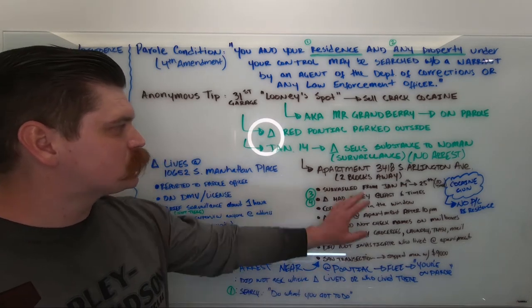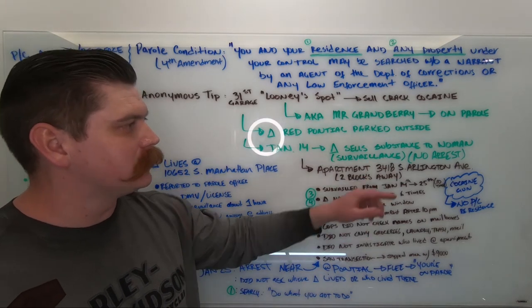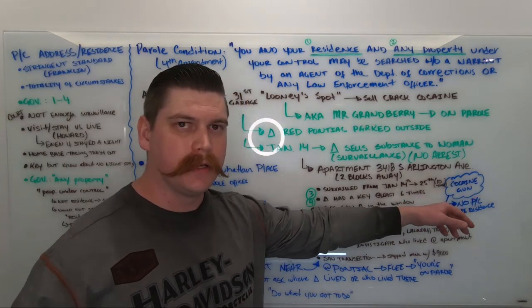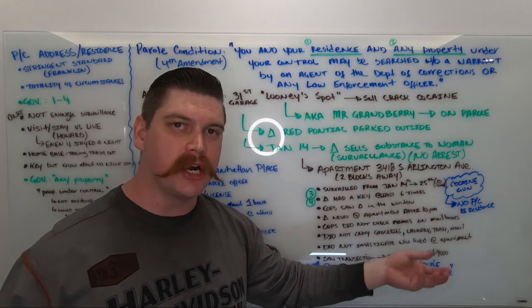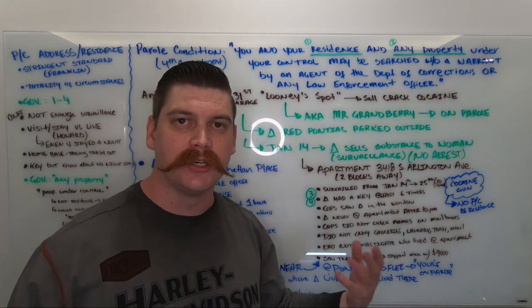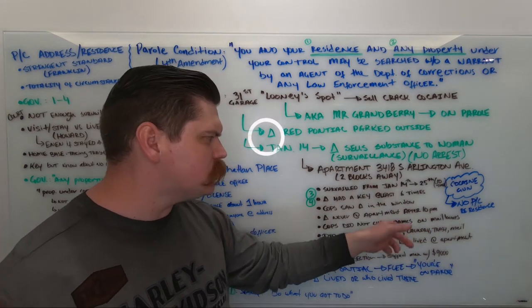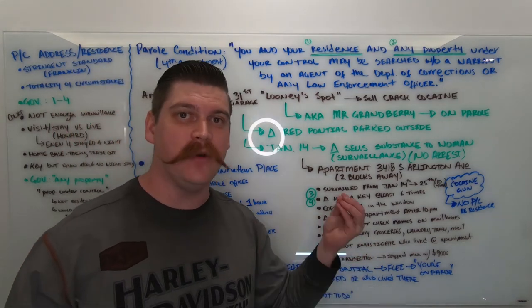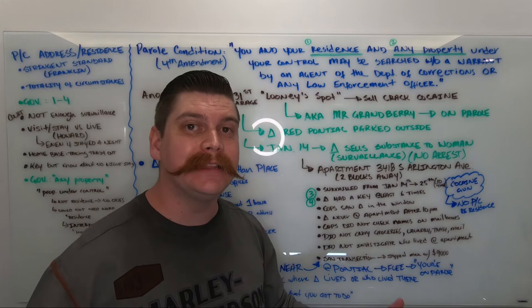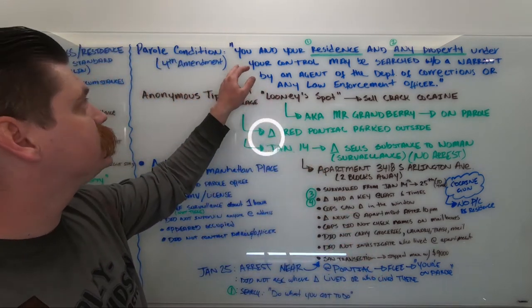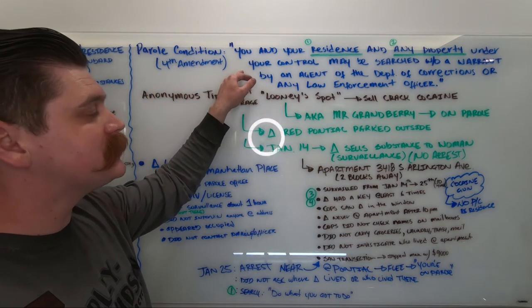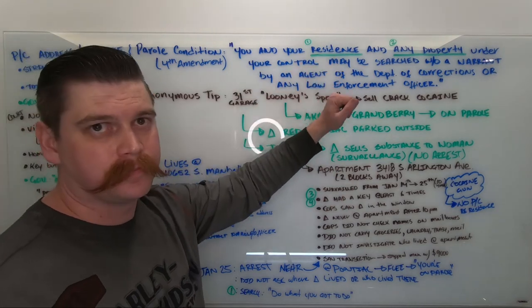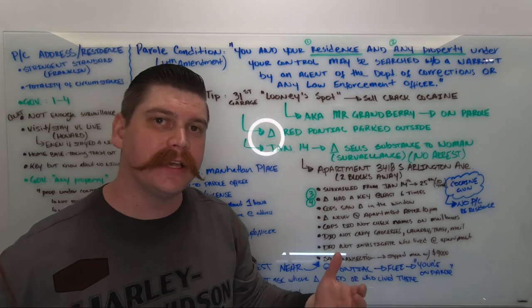They decided to search this apartment at Arlington Avenue. What do they find there? They find cocaine and a gun. So Mr. Granbury gets charged with felon in possession and drug charges. How do they search this apartment? Well, the officers did not have a warrant. So they completely relied on this parole condition because they believed that this was Mr. Granbury's residence. So let's take a look at that.